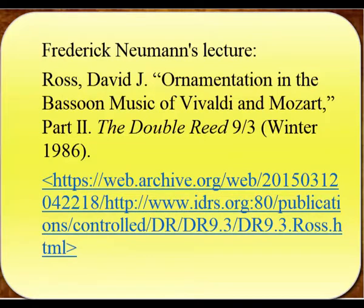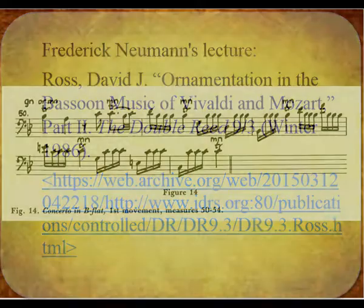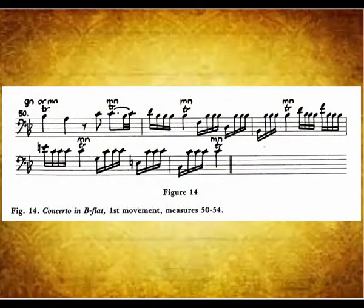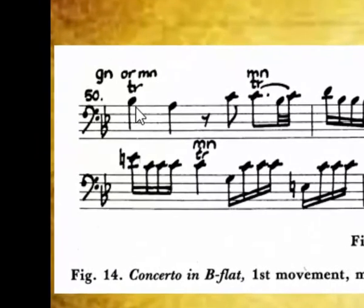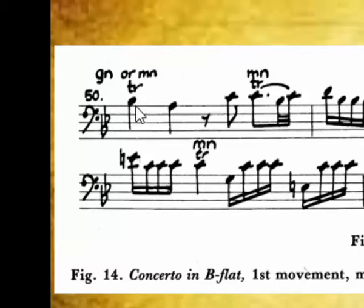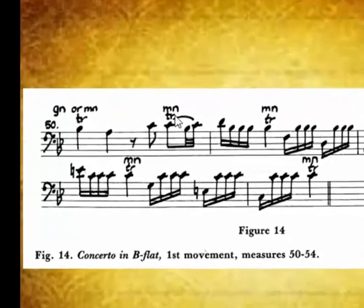In the last video, we clarified the difference between grace notes and appoggiaturas and when they should occur. Here again we see the same principle in practice. Newman indicates that the first trill could start with grace note C or on the main note Bb3. Notice that this cannot be an appoggiatura since the Bb3 is already the dissonance. If the main note of the trill is an appoggiatura already, then either a grace note before the beat could be given, or the trill should start on the main note.